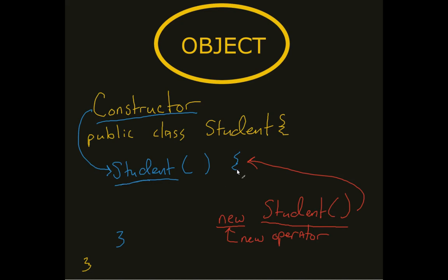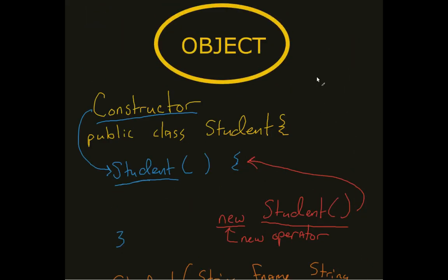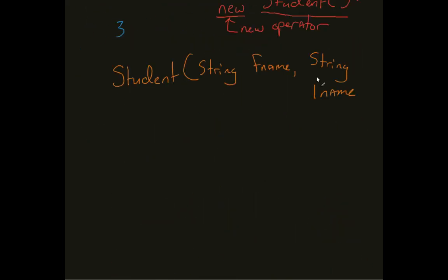And so the same thing that happens when we were designing out methods actually comes into play. What happens if I have a second student constructor? I'm actually able to have multiple student constructors. And this one actually comes in with String FName, String LName.